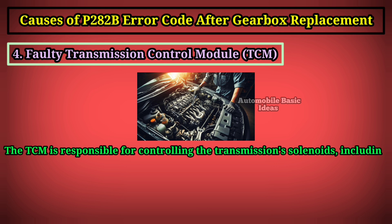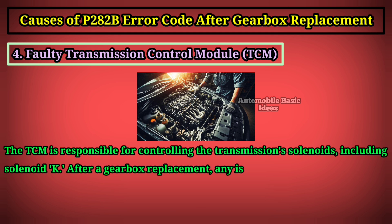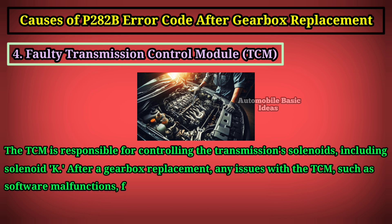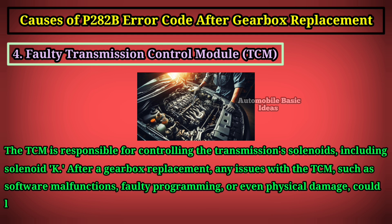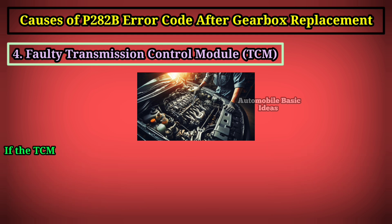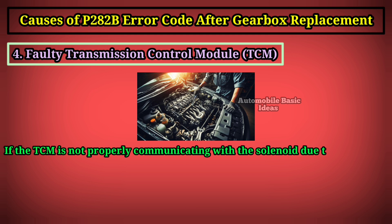Four: faulty transmission control module (TCM). The TCM is responsible for controlling the transmission solenoids, including solenoid K. After a gearbox replacement, any issues with the TCM — such as software malfunctions, faulty programming, or physical damage — could lead to the P282B error code.